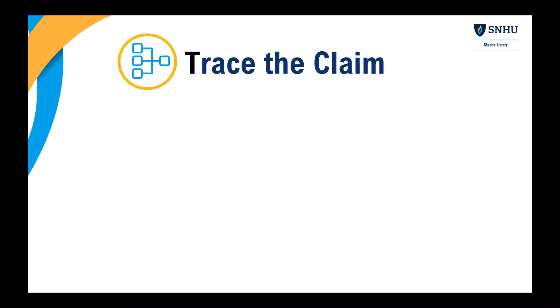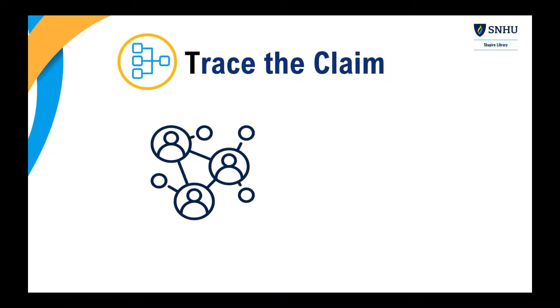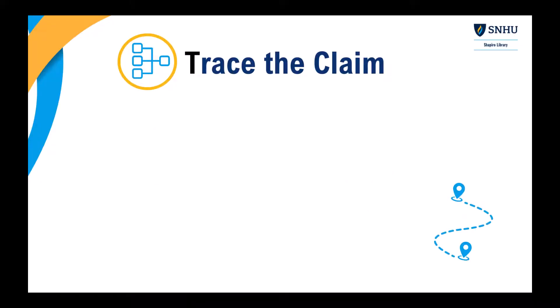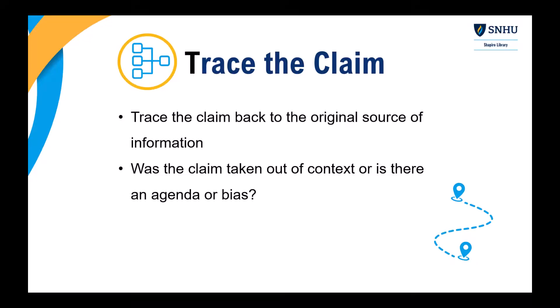And finally, there's step four: trace the claim. Most of the information you see on the web is not original reporting or research. Trace the claim back to the original source of the information. Was the claim taken out of context? Or is there an agenda or bias? Look at how the information was reported and whether any important details were omitted. This helps you understand whether the information was manipulated or presented accurately.